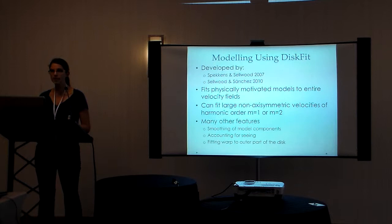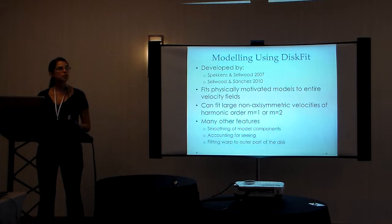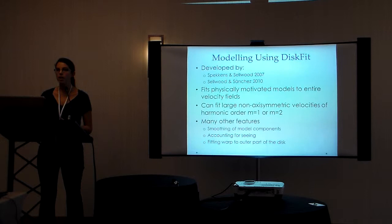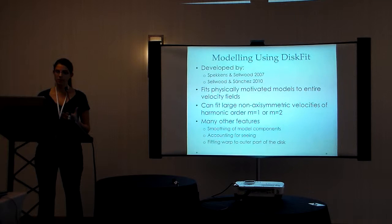And DISC-BIT actually fits not only axisymmetric velocities, but also non-axisymmetric velocities of either harmonic order M equals 1, which corresponds to lopsided flows, or M equals 2, which corresponds to bi-symmetric flows, which could be caused by a triaxial halo or a bar in the galaxy. DISC-BIT has many other features that make it advantageous to use for dynamical studies, including that you can fit a warp to the outer part of the disk of a galaxy.